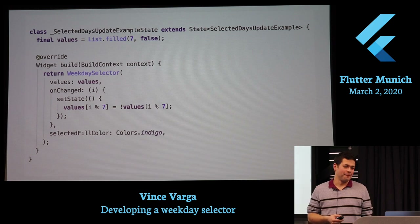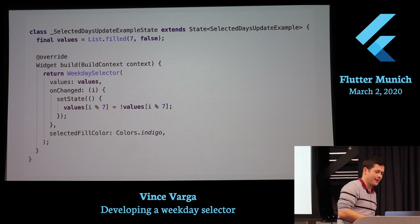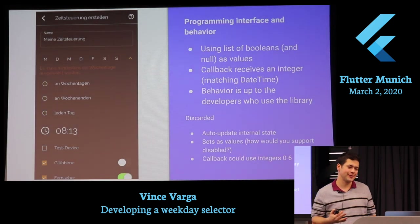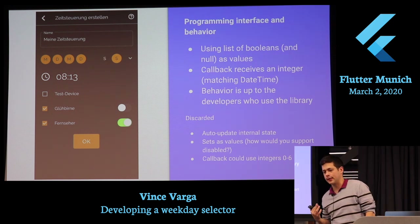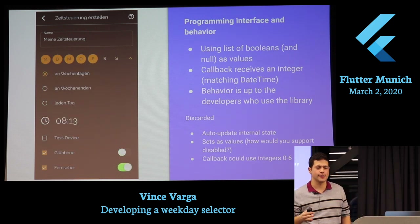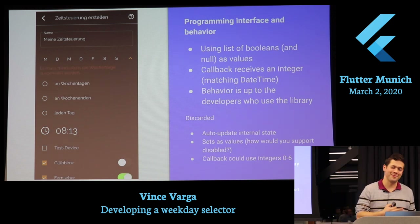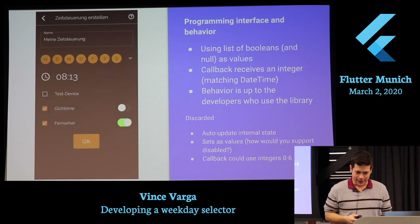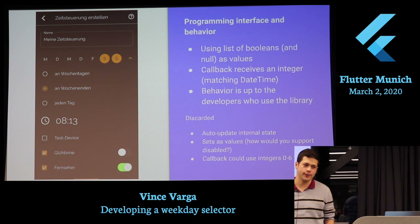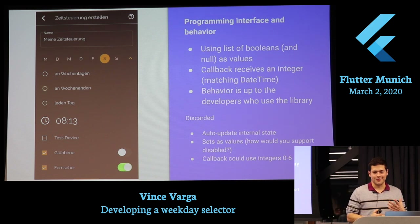It's a stateful widget and you would just set the state — you can use any other state management solution you want. The reason I chose a list of booleans is because I also wanted to support the disabled state. Initially I used a set of integers but that didn't work well because I couldn't support disabled, or it would have become more and more complicated. This way the behavior is up to the developer using the package, which gives more freedom.